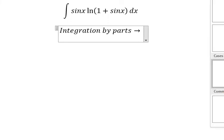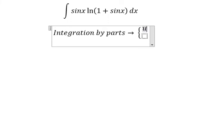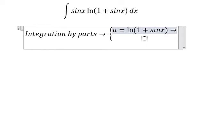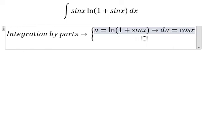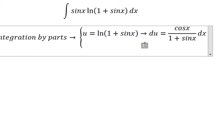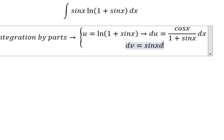We have u equal to ln of one plus sine x, so du equals cosine x over one plus sine x dx. dv equals sine x dx, so v equals negative cosine x.